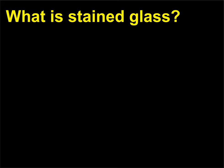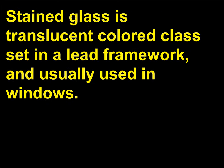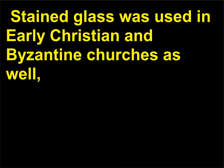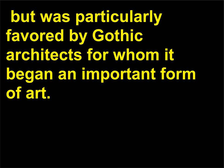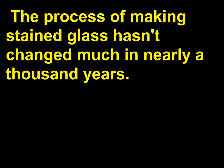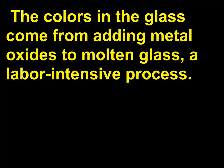What is stained glass? Stained glass is translucent colored glass set in a lead framework, and usually used in windows. Stained glass was used in early Christian and Byzantine churches as well, but was particularly favored by Gothic architects, for whom it became an important form of art. The process of making stained glass hasn't changed much in nearly a thousand years. The colors in the glass come from adding metal oxides to molten glass, a labor-intensive process.